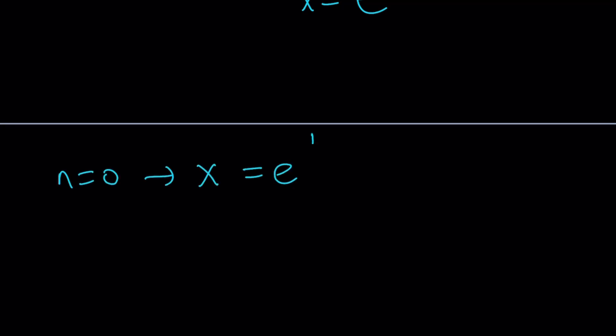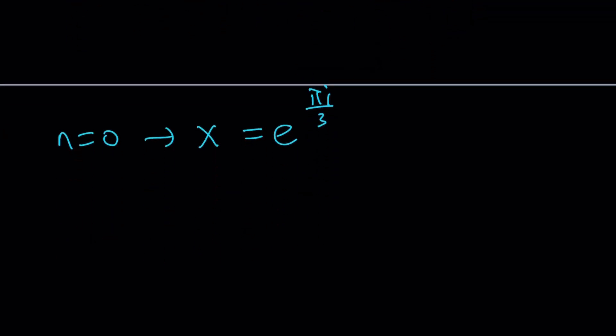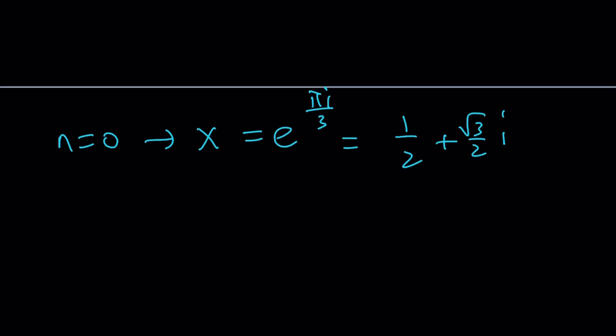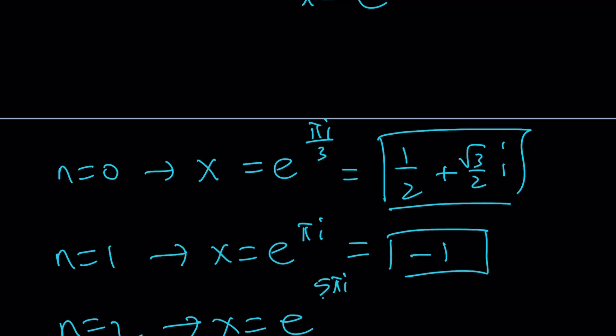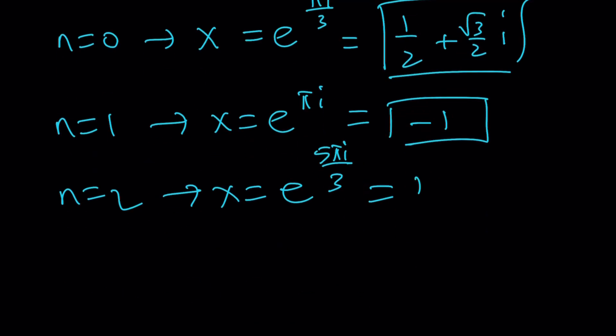If n is 0, it's kind of interesting. We don't get the real value first. We get 1 half plus root 3 over 2i, which is, by the way, one of the cube roots of negative 1. If you cube this number, you're going to get negative 1. You can test it out. n equals 1 gives you x equals e to the power 3 pi i over 3, which is pi i, and that's going to give you negative 1. Wow, this is the real solution. This is the complex one. And n equals 2 should give you x equals e to the power 5 pi i over 3, and that should be 1 half minus root 3 over 2i. And these are going to be conjugates. If you go ahead and cube each one of these, you should be getting negative 1.